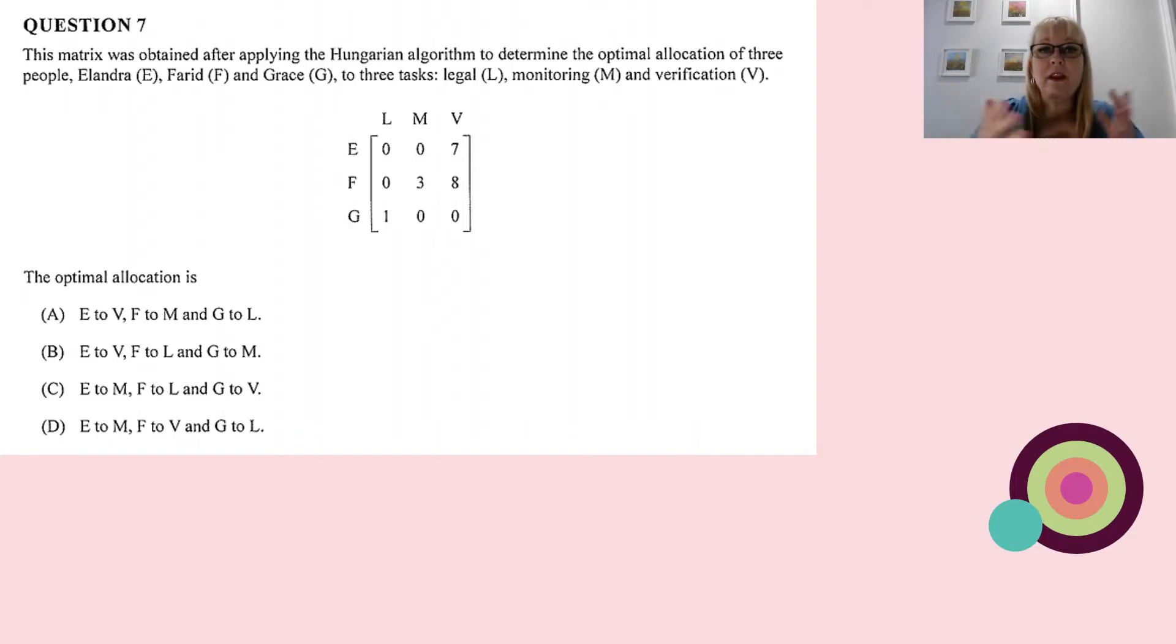We need to work out the optimal allocation. We've already worked out the Hungarian algorithm; this is what we've come up with. We need to know how to read this to work out who should be doing what. Firstly, here is Farid. Wherever there's a zero, that tells us what Farid should be doing. I've started with Farid because Alandra and Grace have two zeros in their row. Let's eliminate Farid first. There's only one task that he should be doing, and that's legal, so F will go to L.